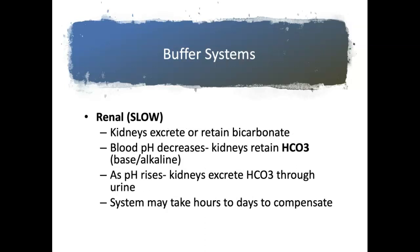The renal system is a little bit slower, and it helps by either retaining or excreting bicarb. If the blood pH decreases — which is acidic — the kidneys will retain bicarb to level it out. If the pH increases — alkaline state — the kidneys will excrete bicarb through the urine, which will bring the pH down into a normal range. But this system is slower and may take hours or days to compensate.